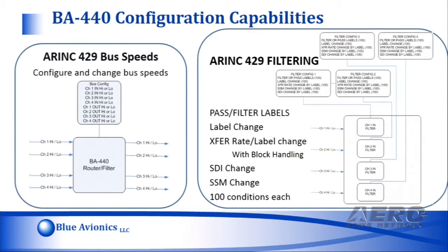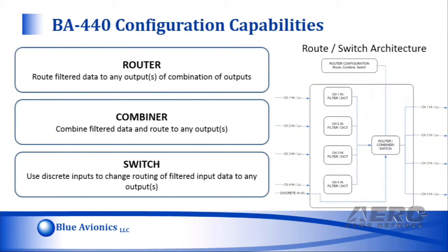We can change the SDI and SSM — there are 100 conditions of each. From there, we route the ARINC data to our router, and in our router you can choose which channels you want it to go out. You can combine them together and combine the data to go out a single channel, or you can use it as a switch using the discrete inputs to actually switch the ARINC data.